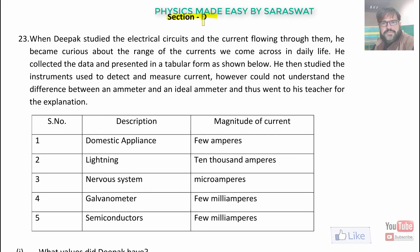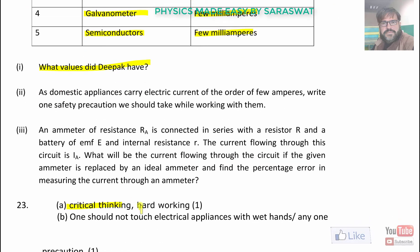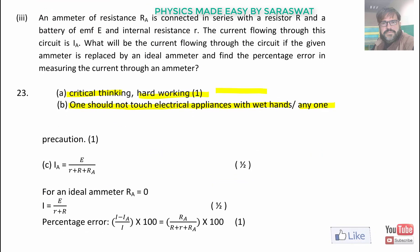Next is section D value based question. When Deepak studied the electrical circuits and the current flowing through them, he became curious about the range of the currents we come across in daily life. He collected the data and presented in a tabular form as shown. Domestic appliances has few amperes. Lightning has 10,000 amperes. Nervous system microamperes. Galvanometer few milliamperes. Semiconductor few milliamperes. What values does Deepak have? Critical thinking, hard working or good knowledge of physics practical thinking.